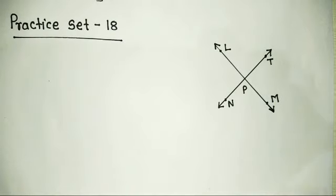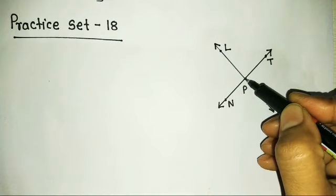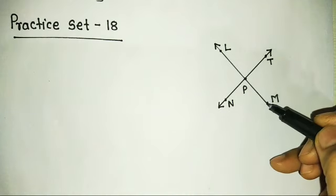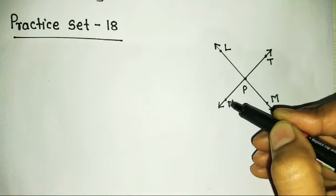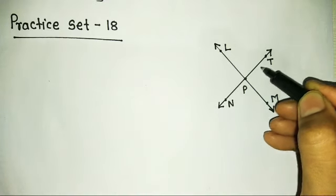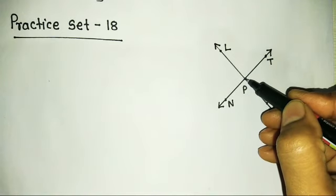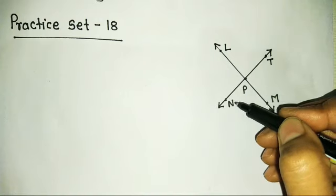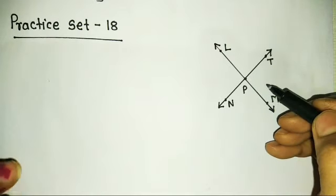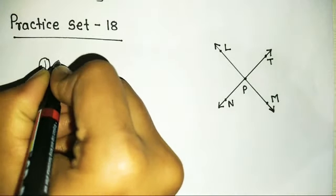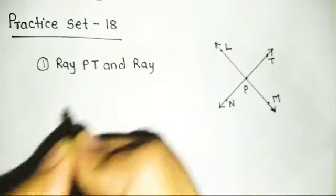In this figure, P is the common origin point. We need to find two pairs of opposite rays. From P, one ray goes in the T direction and another ray goes in the N direction. These two rays form a straight line - line N, P, T. The origin is common at point P. So ray PN and ray PT are opposite rays. The first pair is ray PT and ray PN.